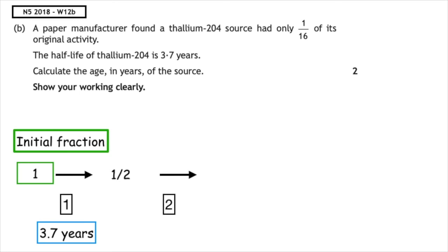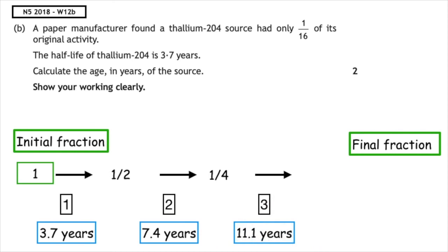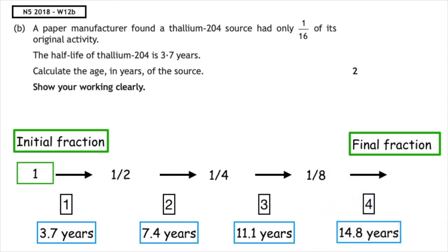If it underwent a second half-life, that would give us a total of 7.4 years, which would leave a quarter. If it underwent a third half-life, that would give us a total of 11.1 years and leave an eighth. And it would have to undergo a fourth half-life, which would give us a total of 14.8 years, leaving a sixteenth — which is given in the question. So the answer is 14.8 years.